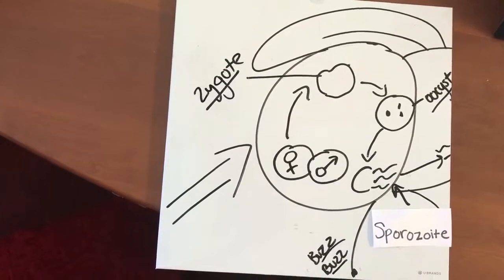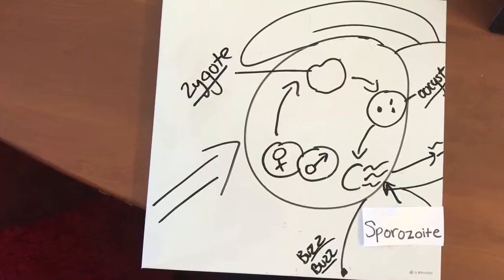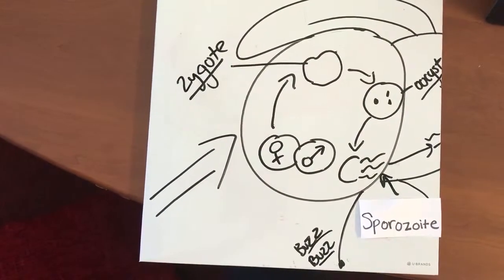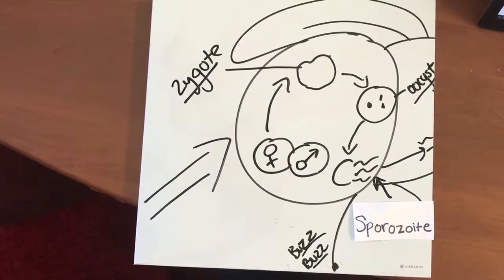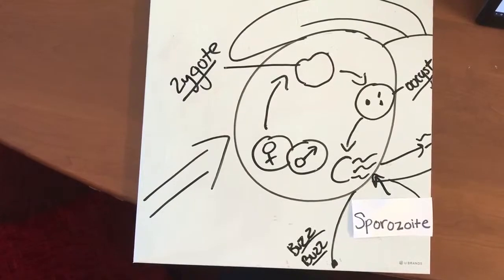This process occurs over a 2 to 3 week span. The period between infection of the mosquito and development of sporozoites determines if the female mosquito will be able to transmit malaria to individuals, thus furthering the cycle of malaria.